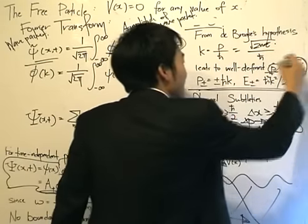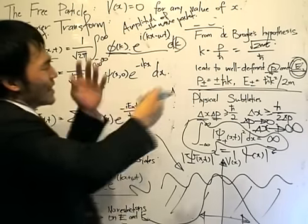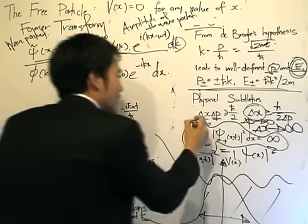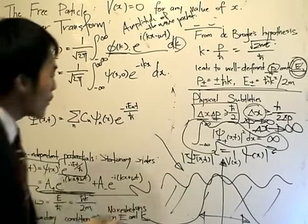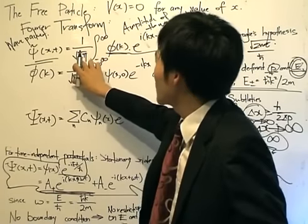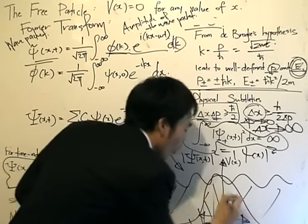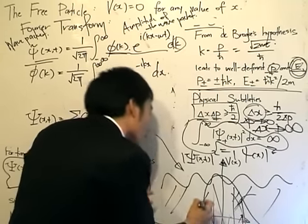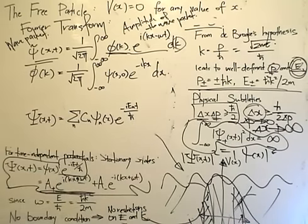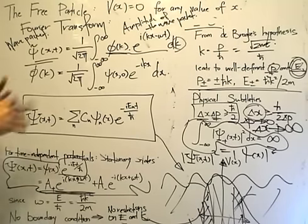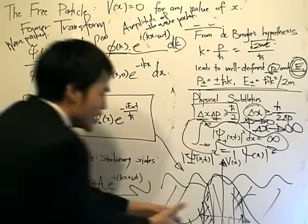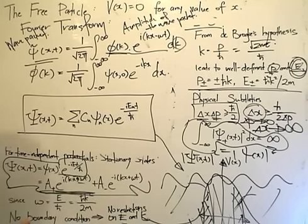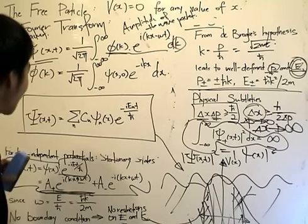The momentum and energy are now no longer well-defined — we need to sacrifice that information to gain information about the particle's position. It's always linked by the Heisenberg uncertainty principle. If we divide by the constant square root of 2π, this whole area can be concluded to be 1 — because now it's normalized. We can now meaningfully state the probability of finding the particle in a given region. This is consistent with the uncertainty principle.